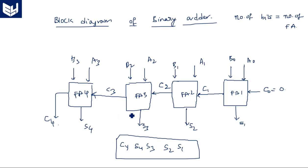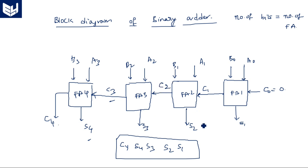What is the problem with this parallel binary adder? If we have A0, B0, A1, B1, A2, B2, A3, B3 all available, S4 cannot be generated until we generate C3, and S3 cannot be generated until we get C2, and S2 cannot be generated until we get C1. The delay incurred in this parallel binary adder is very high.